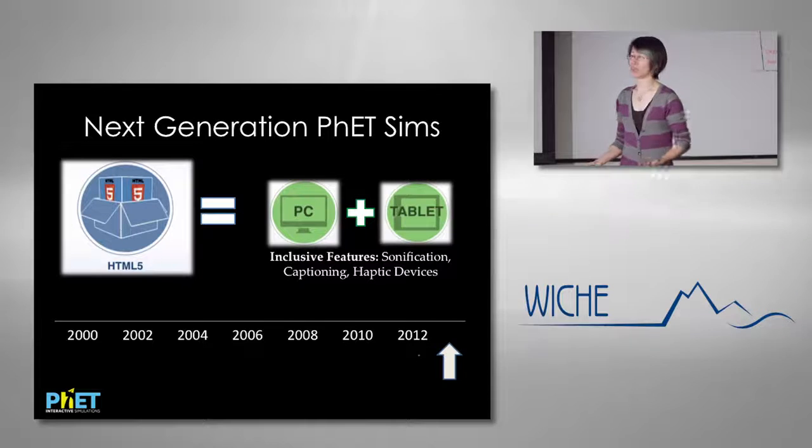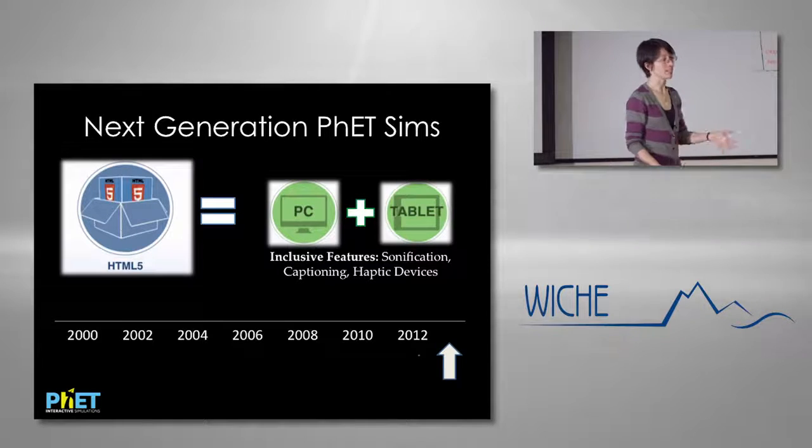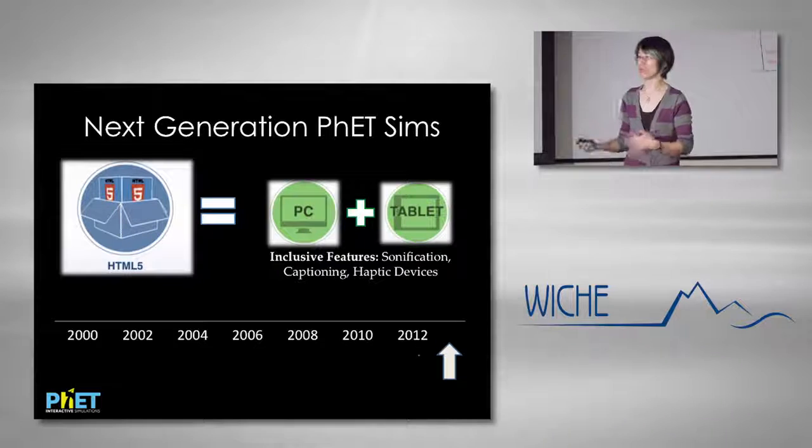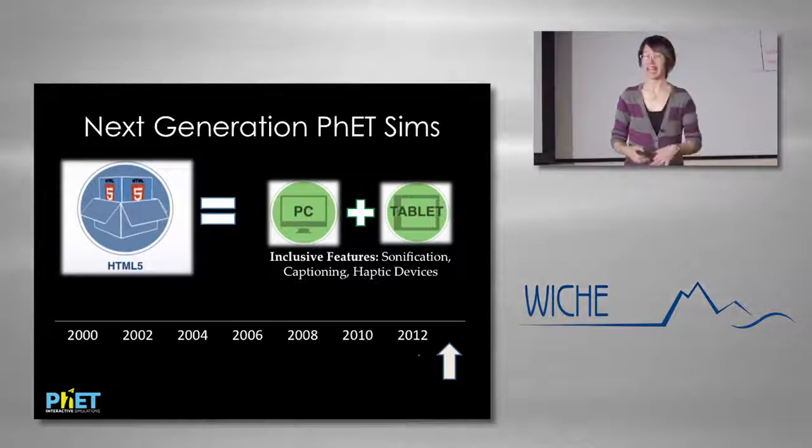Right now the focus is what we call our next generation sims. Early on, all our sims were coded in Java, which meant you needed a laptop with a full operating system to run them, and there were frequent technical issues — Java would update in the background and suddenly a sim wouldn't run. So we're slowly moving all 130-odd sims to HTML5, with the goal that they should run on any device that can browse the web, targeting tablets and Chromebooks.